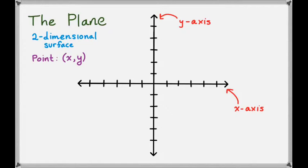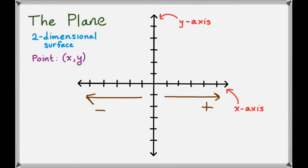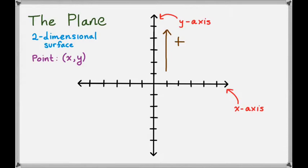A point in the plane has coordinates x and y. The x-coordinate is how far to the right or to the left the point is from the middle, and the y-coordinate is how far up or down the point is from the middle. Going right is the positive x-direction, going left is the negative x-direction, going up is the positive y-direction, and going down is the negative y-direction.